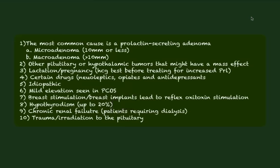One of the most common mistakes is to measure a prolactin level in pregnancy and assume that it is abnormal — a pregnancy test should always be done when a prolactin level is elevated. Certain drugs, including neuroleptics, opiates, or antidepressants, can raise prolactin levels. Mild PCOS can also cause elevations, as can breast stimulation or breast implants through reflex oxytocin stimulation. Hypothyroidism causes hyperprolactinemia in up to 20% of cases due to elevation of TRH. Uncommon causes include chronic renal failure, dialysis, and trauma or irradiation to the pituitary.